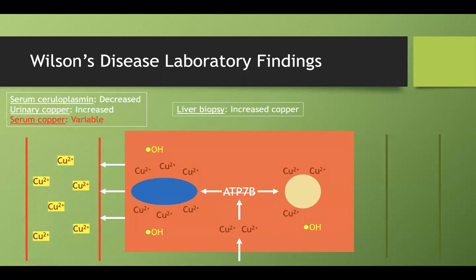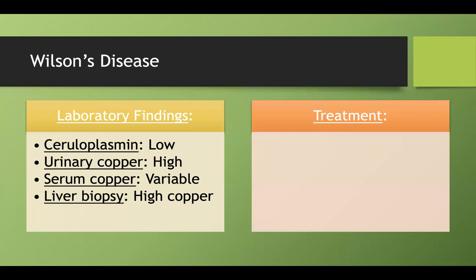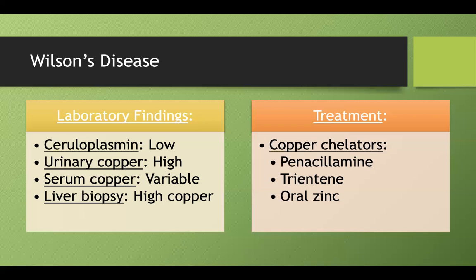For treatment of Wilson's disease, similar to using iron chelators in hemochromatosis, we use copper chelators. The copper chelators to know are penicillamine, trientine, and oral zinc. If the damage is severe enough and the patient is a candidate, the definitive treatment is a liver transplant.